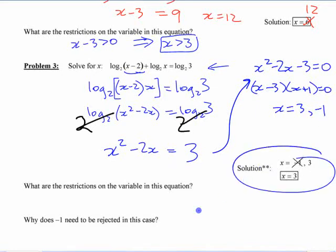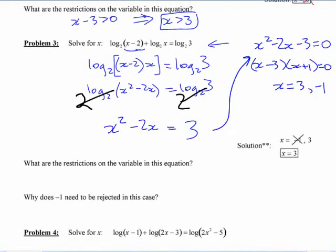So, in other words, x is 3 or negative 1. Now, if you look down here, if you're looking ahead, you wonder why one of them is crossed out. We need to think about what the restrictions are here. What restrictions are on that variable? If you look at the original equation, you've got log of x minus 2, and you've got log of x. Both of those things have to be positive. They can't be 0 or less. So, in other words, you've got x minus 2 has to be greater than 0, and x has to be greater than 0. Whichever one of those is more restrictive is going to dictate what x has to be. This means x has to be greater than 2.